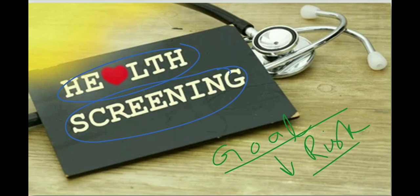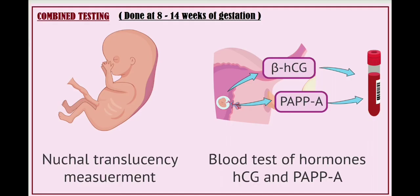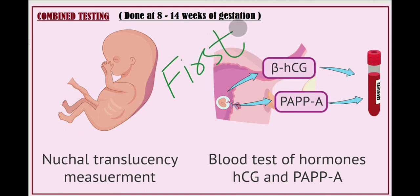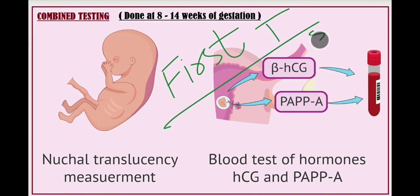As far as Down syndrome is concerned, we have certain first trimester screenings done at about 8 to 14 weeks of gestation, and we also have certain screenings done in the second trimester. We have different tests available.